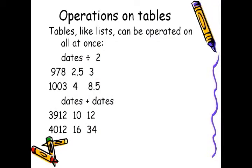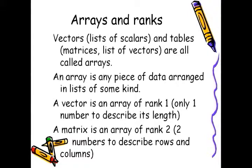We can operate on tables just like lists, all at once. For example, I can divide the contents of a table by two. I can add a table to another or to itself. So the concept of rank comes into play. Vectors are lists of scalars and tables or matrices are lists of vectors. They are all called arrays. An array is any piece of data arranged in lists of some kind. A vector is an array of rank 1 because only one number is used to describe its length. A matrix is an array of rank 2 because two numbers are used to describe its rows and columns. And we can imagine arrays with higher ranks.